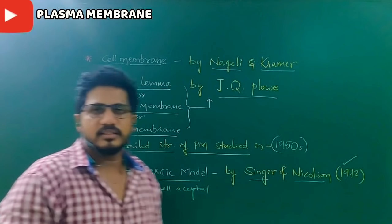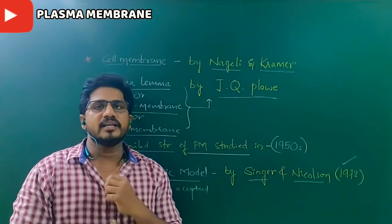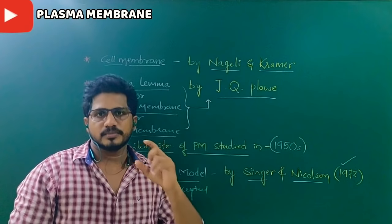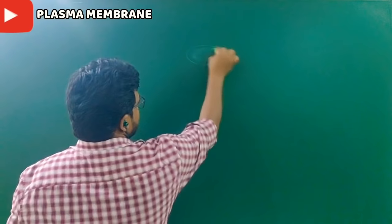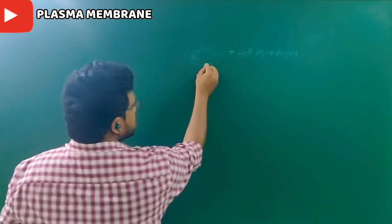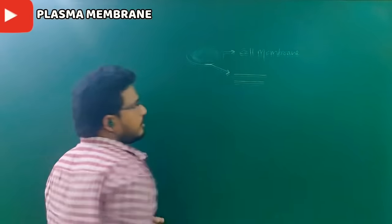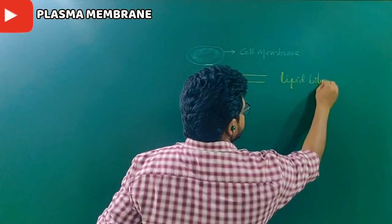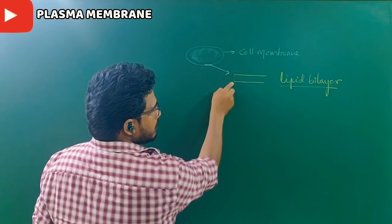If you study the fluid mosaic model carefully, you can understand how this membrane is structured. Mostly, animal cell membranes are formed by lipid layers — two lipid layers arranged in parallel. Let us see the clean structure of the plasma membrane proposed by Singer and Nicholson. If it is a cell, this is the cytoplasm, and this is the cell membrane. Taking the cell membrane in extent, it has two layers of lipids, which is why it is called a lipid bilayer. All eukaryotic cell membranes are made up of a lipid bilayer.